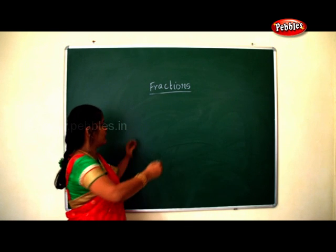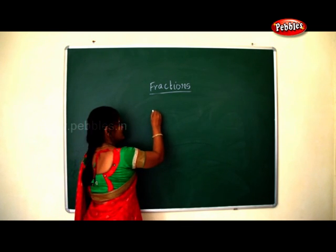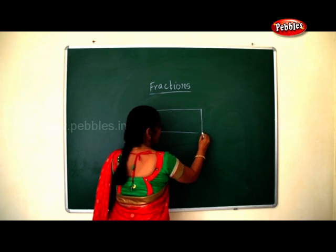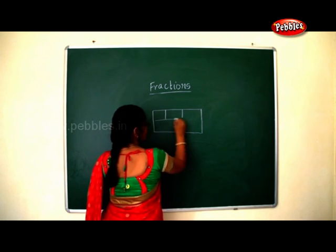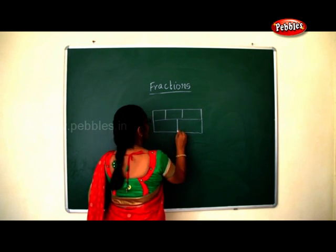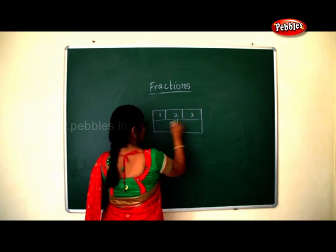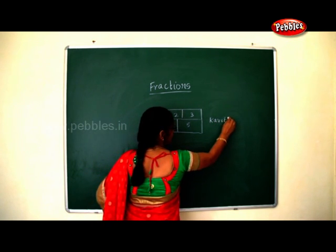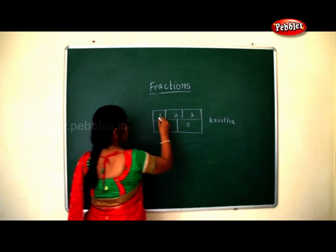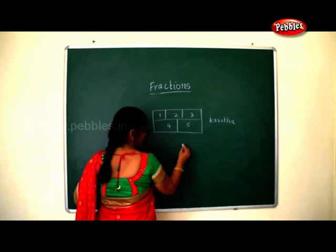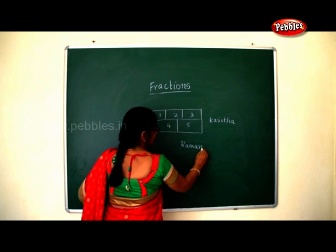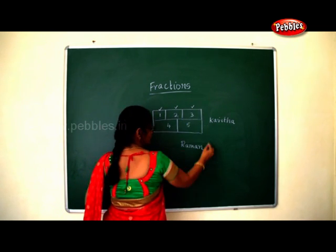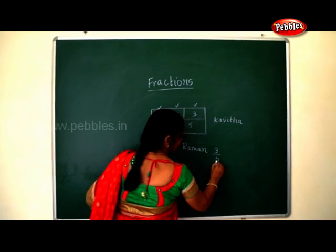Kavitha was having five parts of chocolate. Raman wanted three parts — that is one, two and three — so Raman wanted three parts, that is three by five. So in three by five, three is the numerator and five is the denominator.